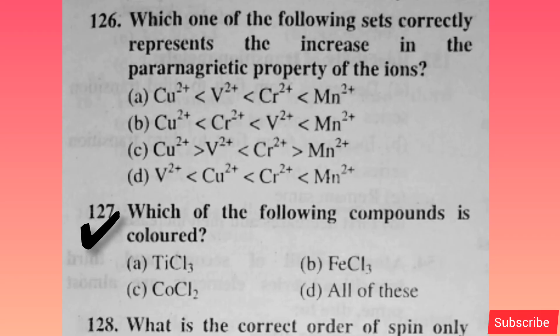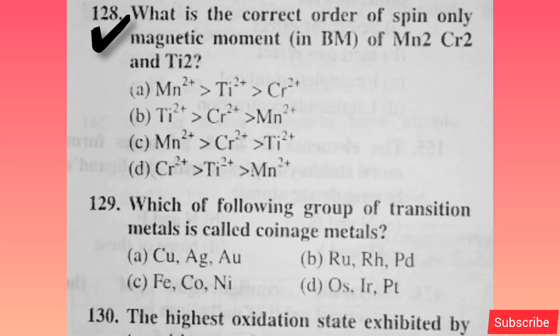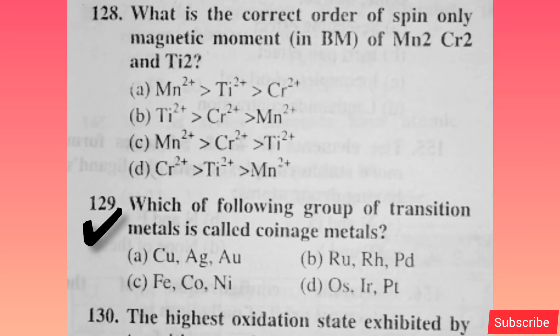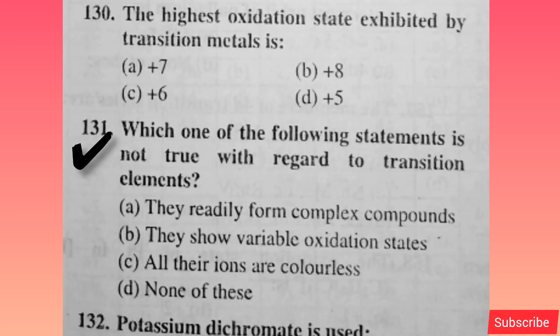Which of the following compound is colored? Option B and option C both are right. Which is the correct order of spin-only magnetic moment in BM of Mn2+, Cr2+, and Ti2+? Option C is correct. Which of the following group of transition metals is called the platinum metals? Option A is correct. The highest oxidation state exhibited by transition metals is — option B is correct. Which one of the following statements is not true with regard to transition elements? Option C is correct.